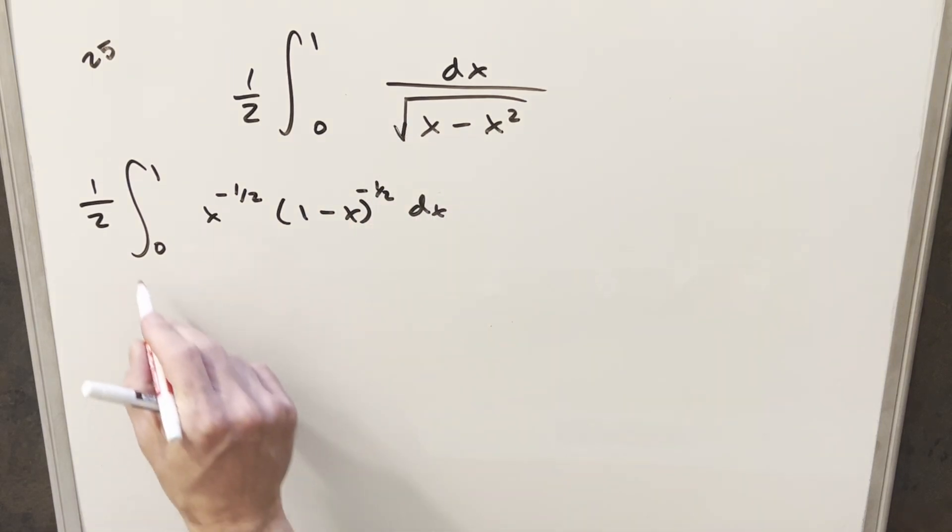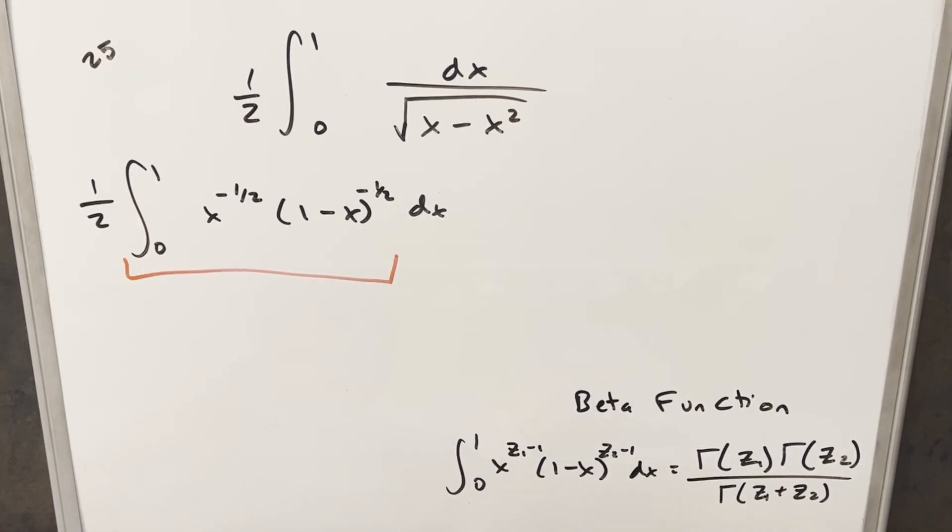But then from here, just notice what we have for this integral is perfectly set up to use the beta function. We have our formula over here to the right. And just notice with this, what we can do is we can go right to our solution in terms of the gamma function.